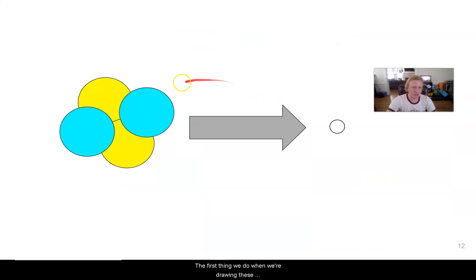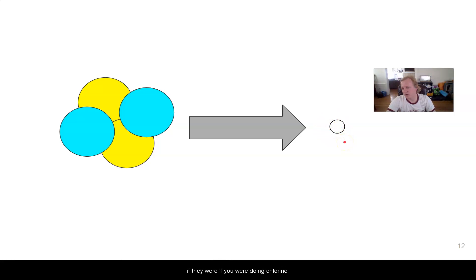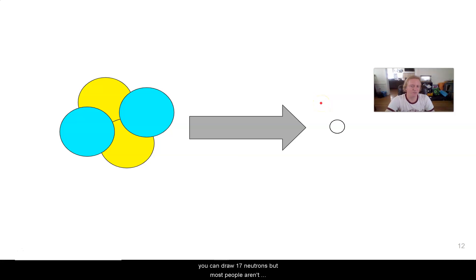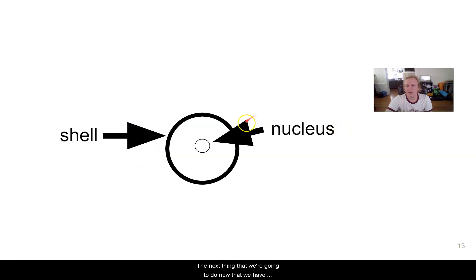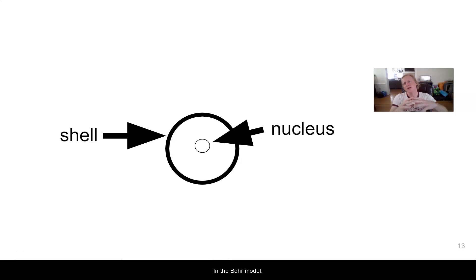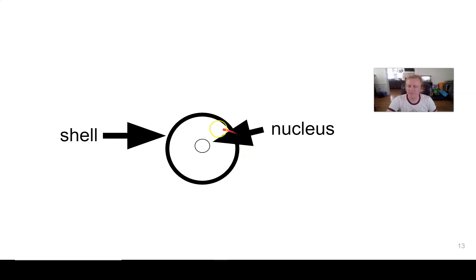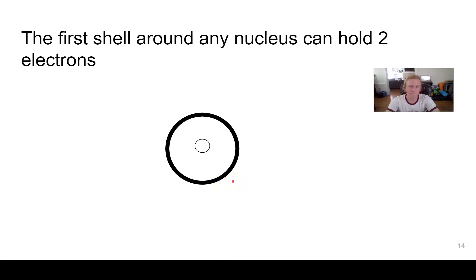When drawing these structures, we take our nucleus — our protons and neutrons — and just simplify it to a dot. Some people will write 'Cl' for chlorine, but a dot is fine. The next thing we do is add our shells, which is where our electrons live. Remember, the nucleus is like the sun in the Bohr model and the electrons float around outside. The first electron shell can hold a maximum of two electrons. These shells also represent an energy level, but we'll talk about that later when we get to photosynthesis.